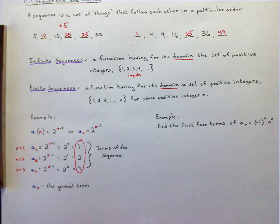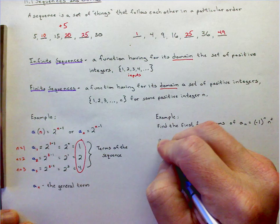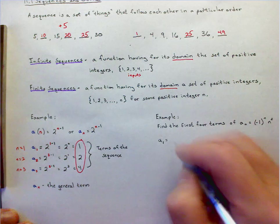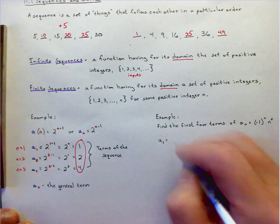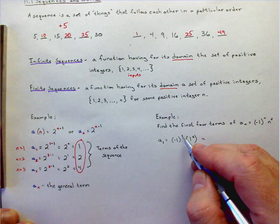Alright, so let's take a look. First thing I'm going to do, and I'm not going to color code it just for time. I'm going to say let n equal 1. So that's a to the first equals negative 1 to the first times 1 squared. And what that turns out to be? Anything to the first power is itself, so negative 1 times 1 is negative 1.